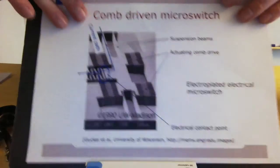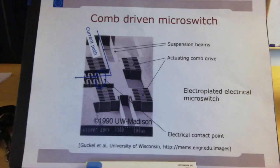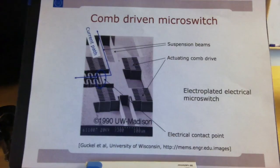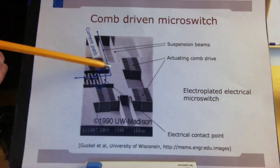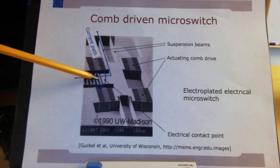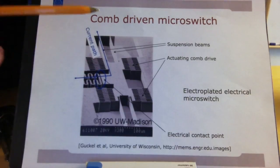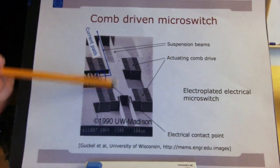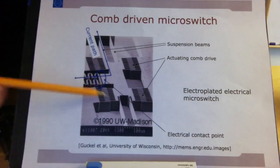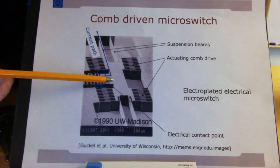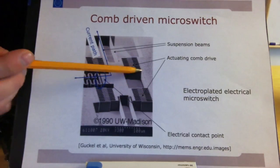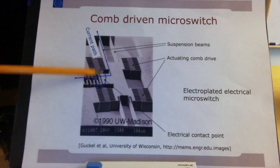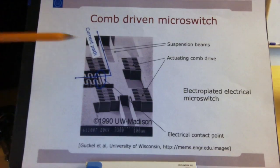Here we see an example implementation of such a structure — a relay, an electrical switch. The idea is to switch a current between two electrodes: either this gap is open or closed. This suspended comb can be attracted by the fixed comb to close the contact, or pulled away by the other comb electrodes to open the switch.